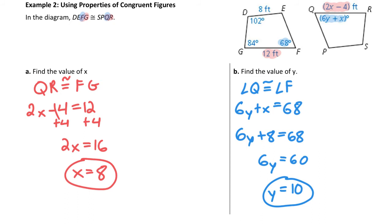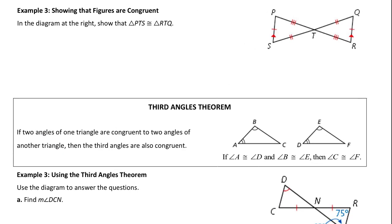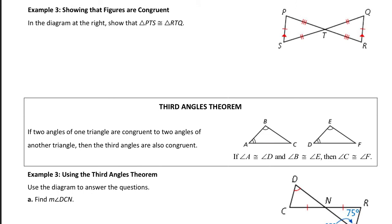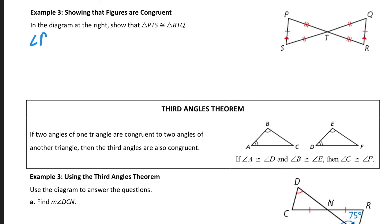So it's important to know which variable is easier to solve for first, and then use that information to keep piecing together that puzzle. In this next example, I'm going to talk about how to show that figures are congruent. We're going to use some concepts that we have talked about before to show that these figures are congruent. To show that triangle PTS is congruent to triangle RTQ, I've got to show that angle P is congruent to angle R. And if you look at angle P and angle R, we've got to notice something.